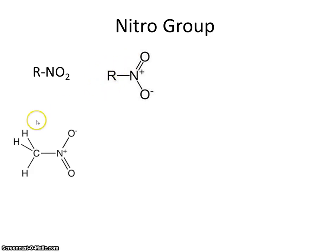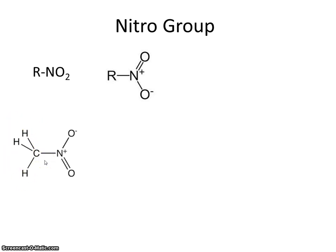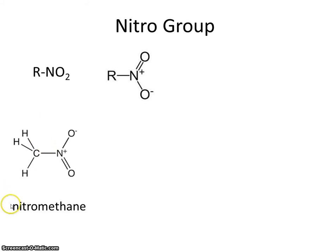Here's an example. This is the nitro group, and this is the parent chain. You can see that the parent chain only has one carbon. You know that's methane. So we call this nitromethane. You've probably even seen this before — this is used as a fuel.